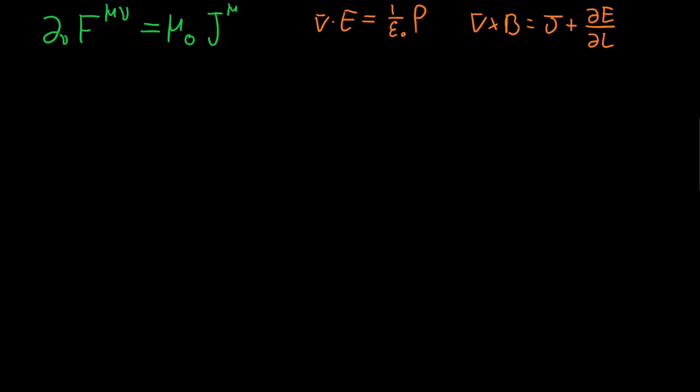So first of all to prove the continuity equation we're going to do a little sort of argument of symmetry. We want to know what the quantity partial mu partial nu of f mu nu is equal to.